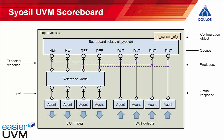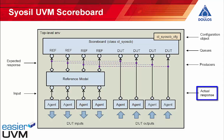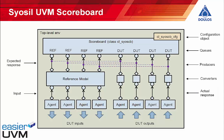There's one further twist in instantiating the Siocil scoreboard concerning the data types of the input queues. In the release of the scoreboard current at the time of making this tutorial, all input queues receive transaction objects of type UVM sequence item. However, the agents generating actual responses produce protocol-specific transactions. So in the code generator we instantiate some conversion boxes to convert between the protocol-specific transaction types generated by the agents and the UVM sequence item type required by the scoreboard. I'll show you the code for that later — it's not a big deal, just a quirk of how we instantiate the scoreboard at the moment.